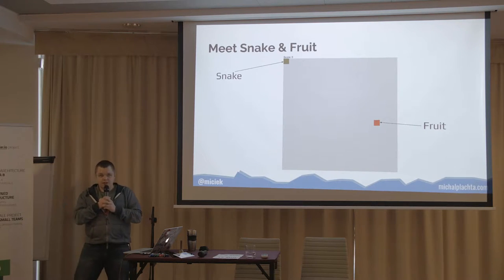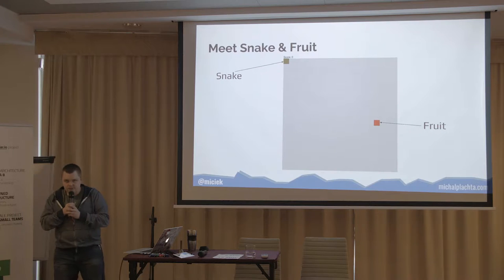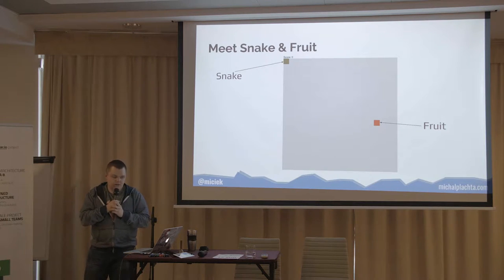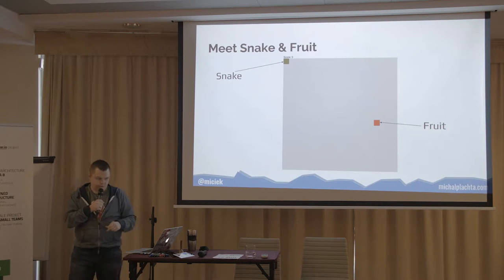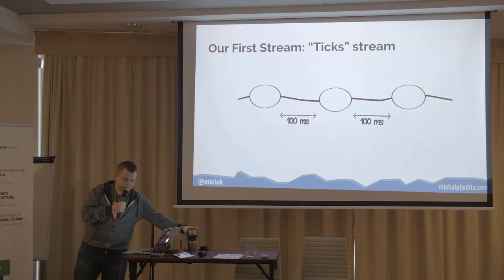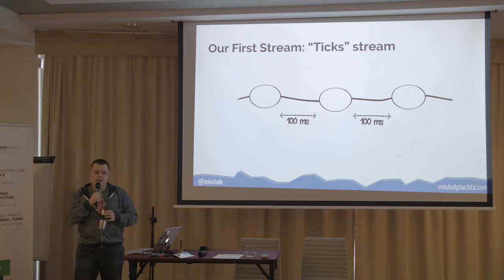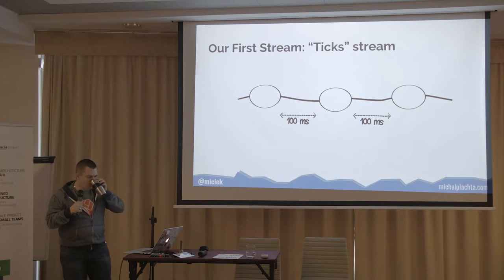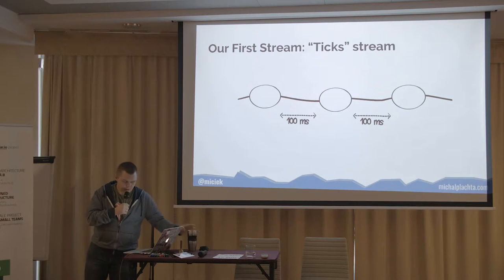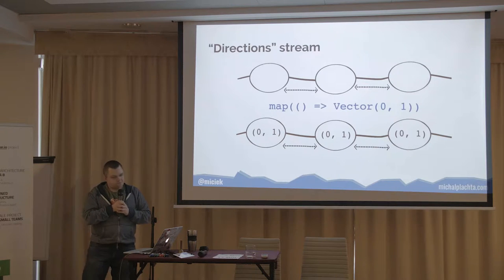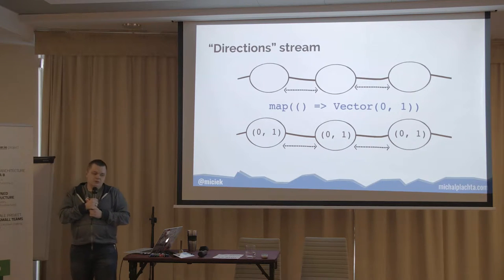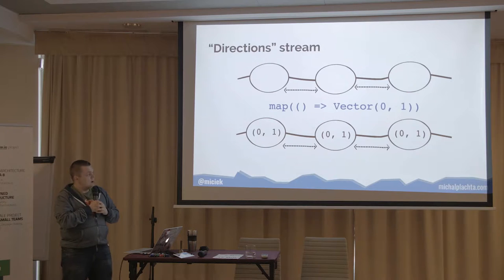Let's meet the main characters for today. The gray area is the board. The green square is our protagonist, the snake. And the red square is fruit — a static thing that we'll need to eat as many as possible during the game. And here's the first stream: a stream of ticks. It's a stream that outputs an empty object every 100 milliseconds. So let's try to get this tick stream as an input to the first streaming operator of today — there will be six of them — and map is the first one.